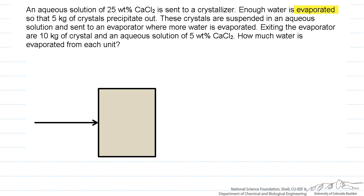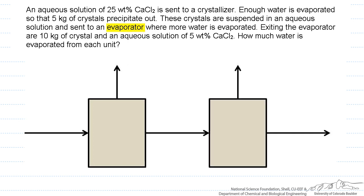Enough water is evaporated, so that means that we have water coming off of the crystallizer, so that five kilograms of crystals precipitate out. These crystals are suspended in an aqueous solution, and then they're sent to an evaporator, where more water is evaporated, and exiting the evaporator are 10 kilograms of crystal and five weight percent aqueous solution, and how much water is evaporated from each unit.